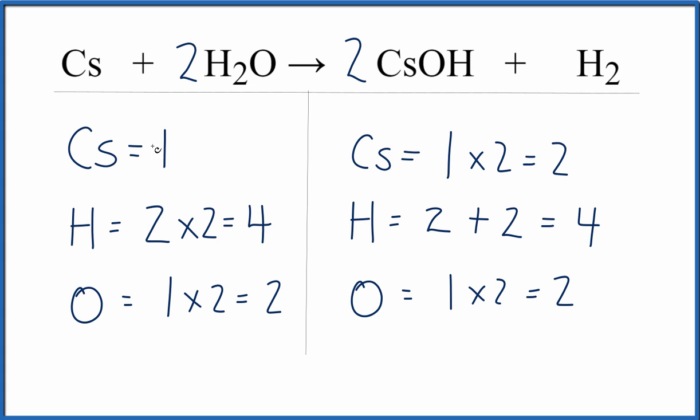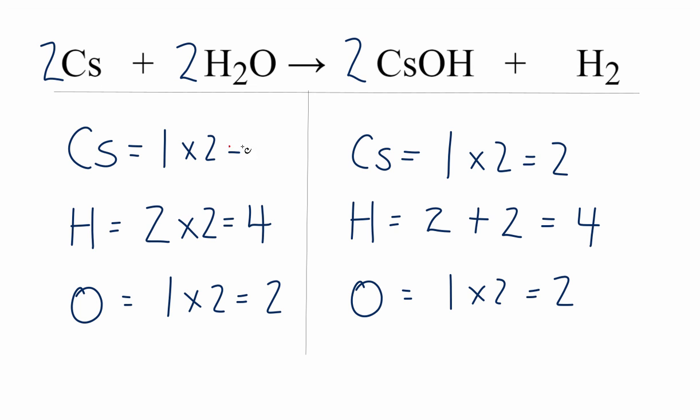So we have two here and one here. Why don't we just put a two right in front, because one times two, that equals two, and we are done. We've balanced this equation.